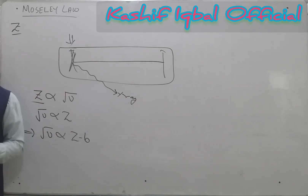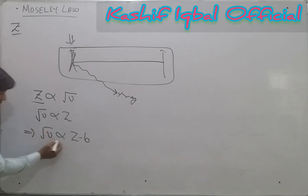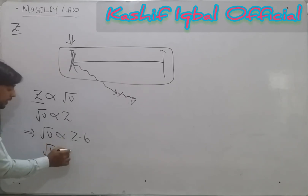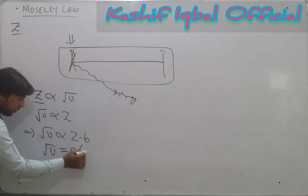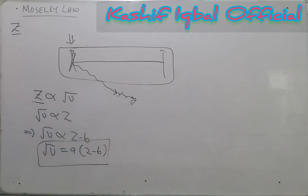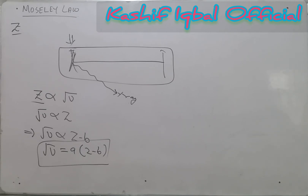By these terms, the main form of Moseley's equation is: √ν = A(Z − B). This is the final equation. Here A is the proportionality constant, and B is the screening constant. For K-series X-rays, B has values of 1, 2, and 3 depending on the series.